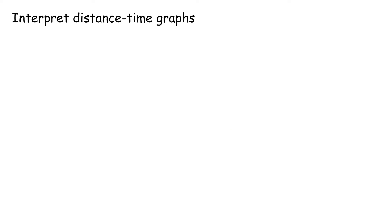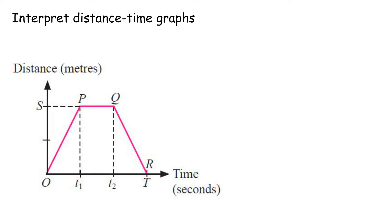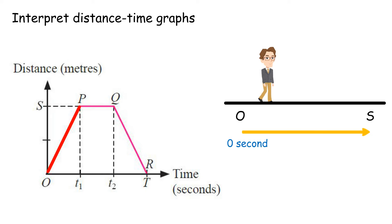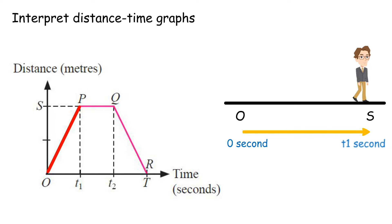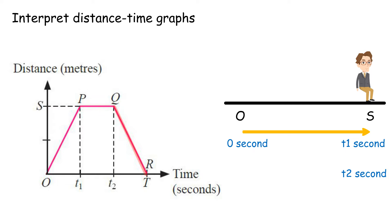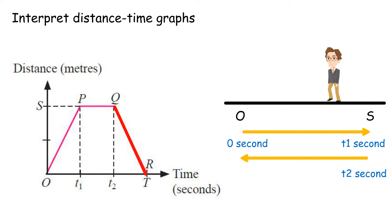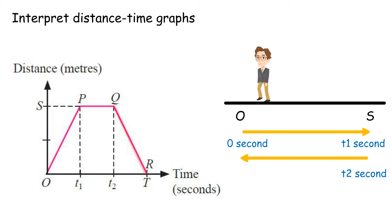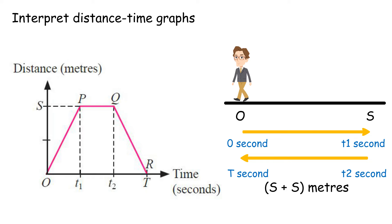Interpret Distance-Time Graphs. The Distance-Time Graph shows a motion from O to R passing through P and Q. O to P: Positive gradient — motion for a distance of S meters in a period of T1 seconds. P to Q: Zero gradient — no change in distance for the period T2 minus T1 seconds. Q to R: Negative gradient — object moves back to its original place or moves in the opposite direction. Overall: motion of 2S meters to and fro in a period of T seconds.